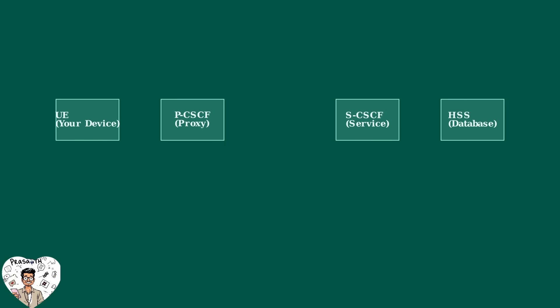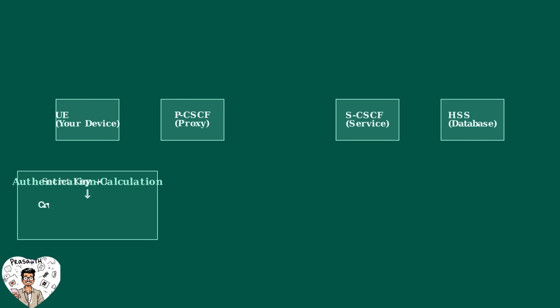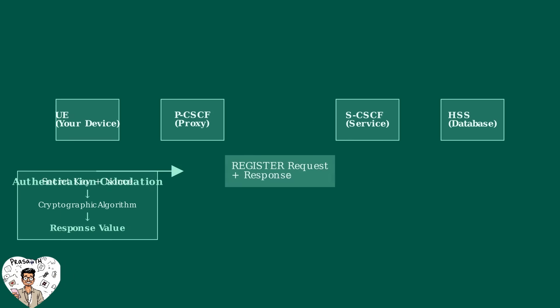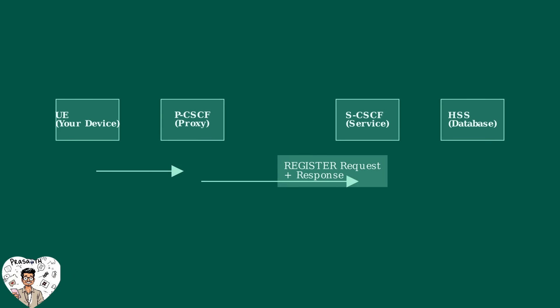The PCSCF forwards this 401 response to your device. Your device now knows it needs to prove its identity using the NONCE provided. Your device has a shared secret key stored securely in its SIM card. It combines this secret key with the NONCE using a cryptographic algorithm to calculate a response. Your device then sends a new register request containing this calculated response back through the PCSCF to the SCSCF — proving it knows the secret key without actually sending the key itself.